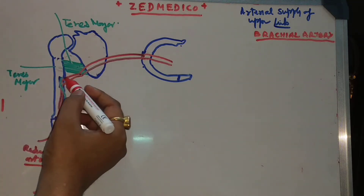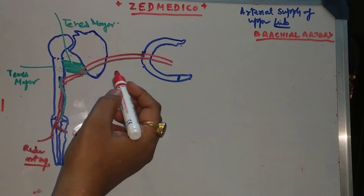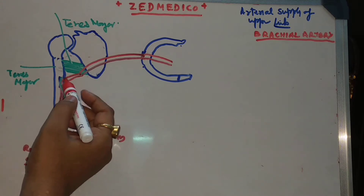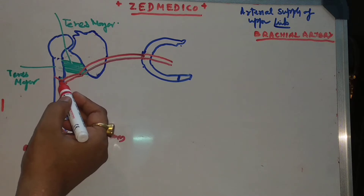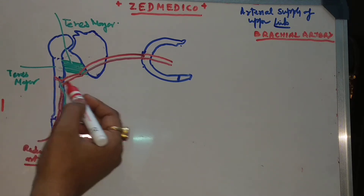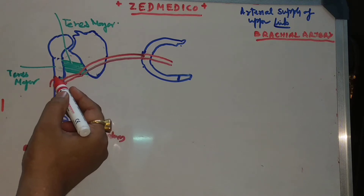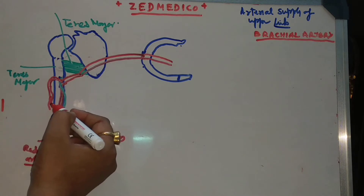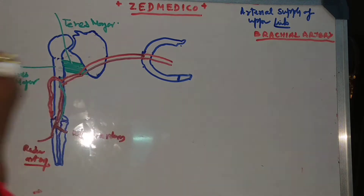The brachial artery at the level of mid-shaft divides and gives off a larger branch known as the profunda brachial artery. The profunda brachial artery crosses the radial groove of the humerus along with the radial nerve and descends down, ending at the elbow and forming anastomosis around the elbow joint.